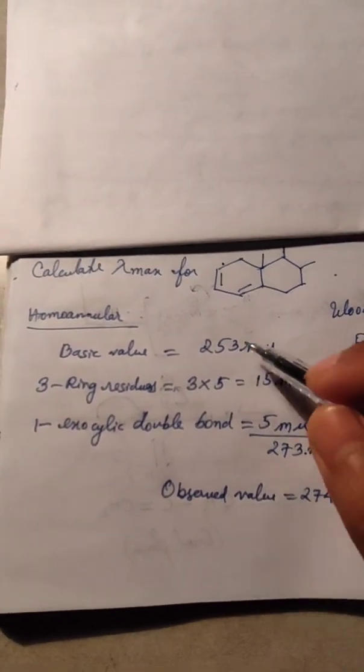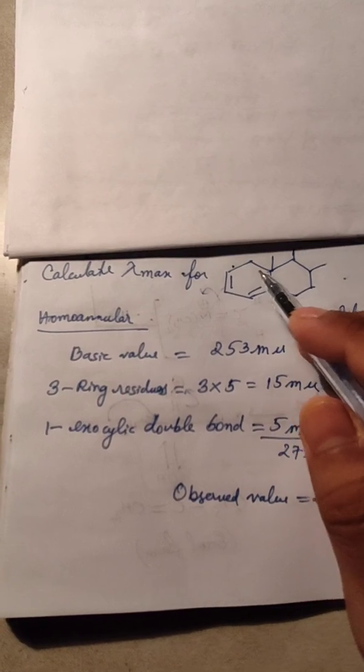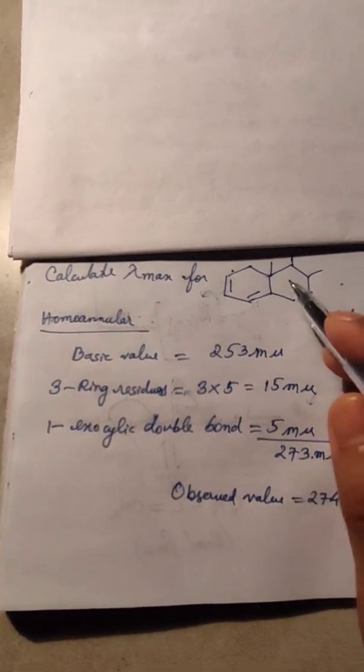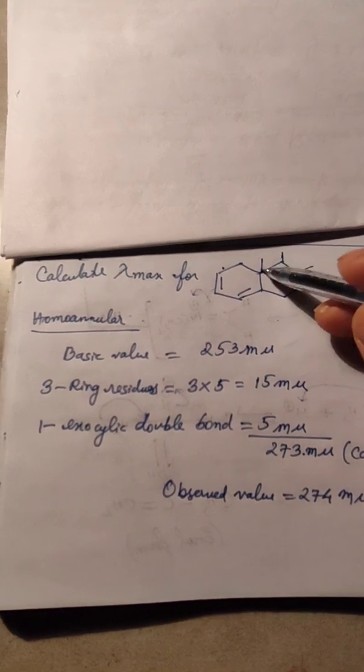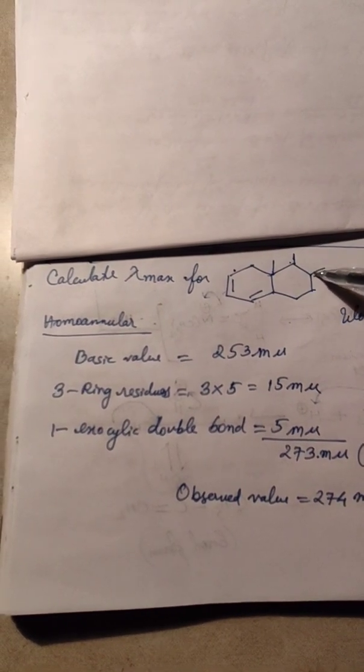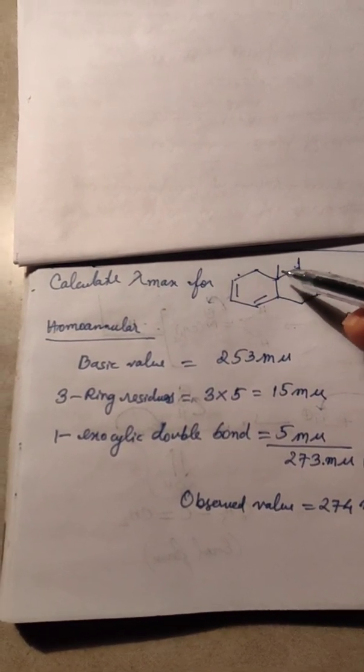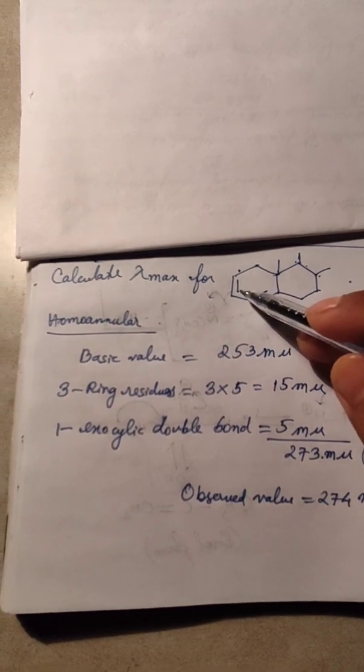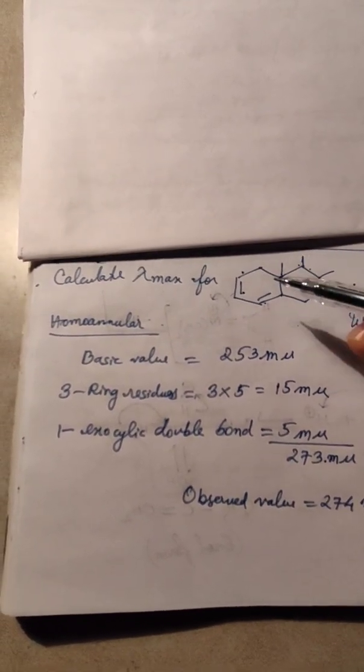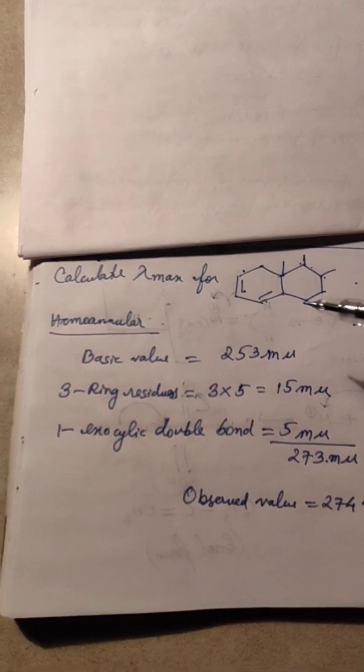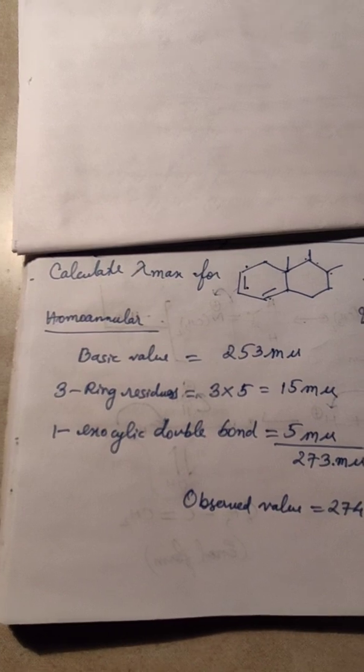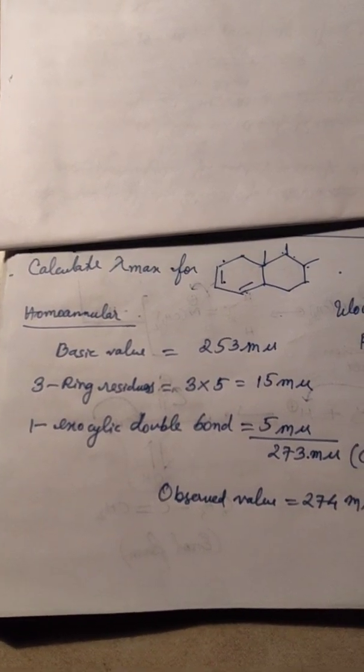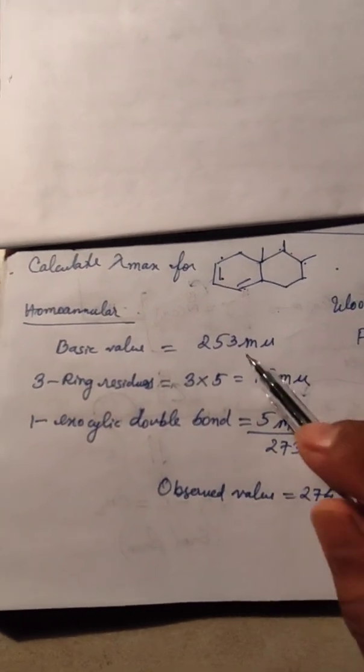This structure has two fused rings, three substituent groups, and one-two double bonds are there. So how will we proceed to the calculation of lambda max? First, we have to keep in mind and memorize these values of some compounds according to Woodward-Fisher rules.